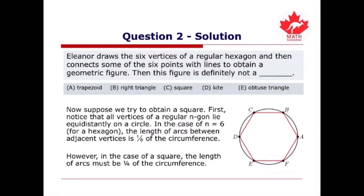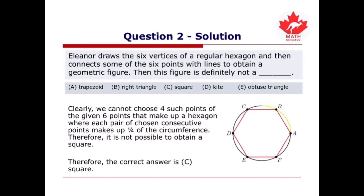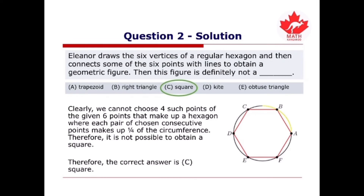Now suppose we try to obtain a square. All vertices of a regular N-gon lie equidistantly on a circle. For a hexagon (N=6), the arc between adjacent vertices is one-sixth of the circumference. However, for a square, the arc between vertices must be one-fourth of the circumference. We cannot choose four points from the six hexagon vertices where each pair of consecutive chosen points spans one-fourth of the circumference. Therefore, it is not possible to obtain a square, and the correct answer is C.